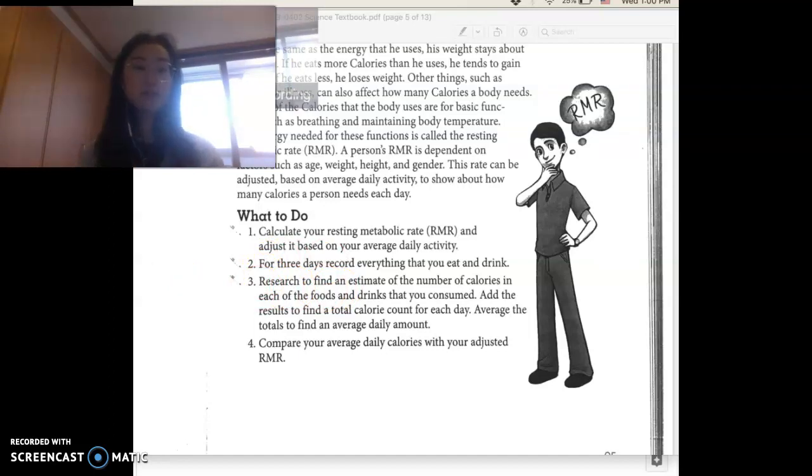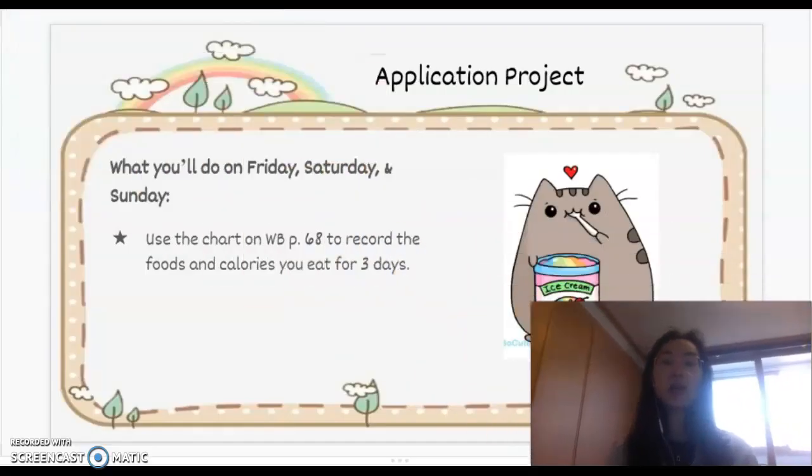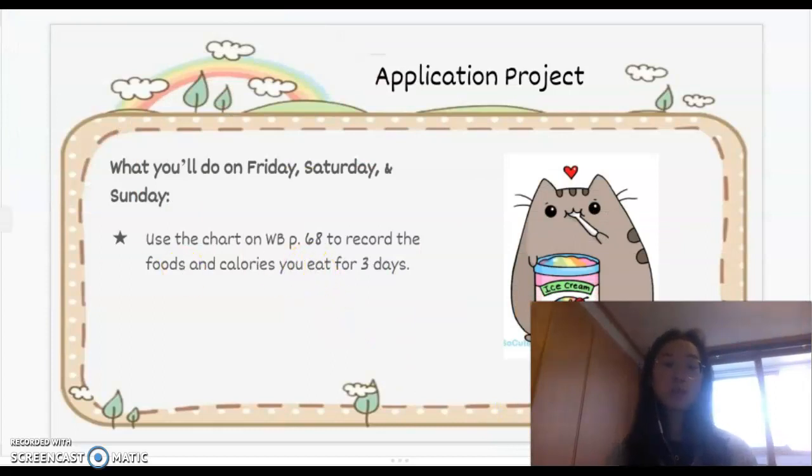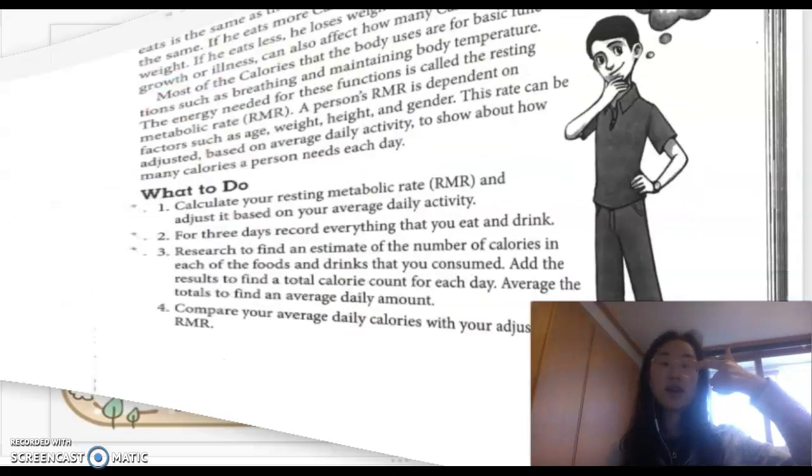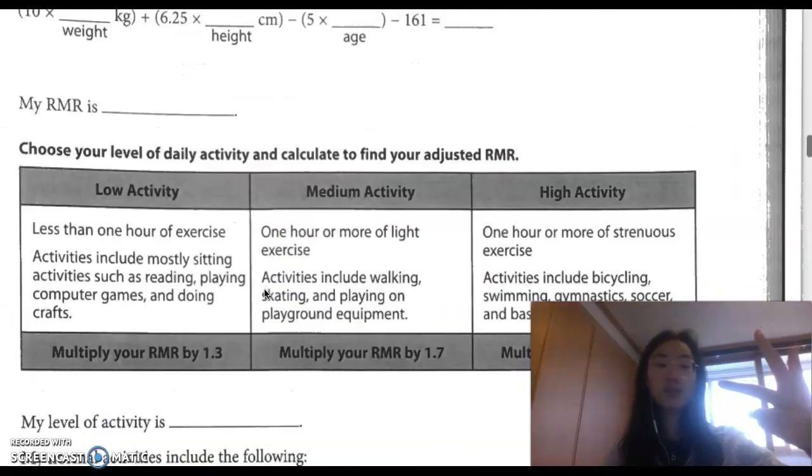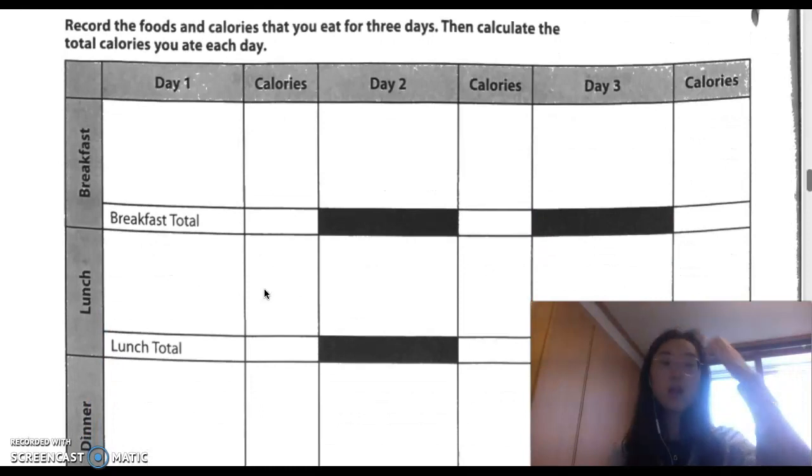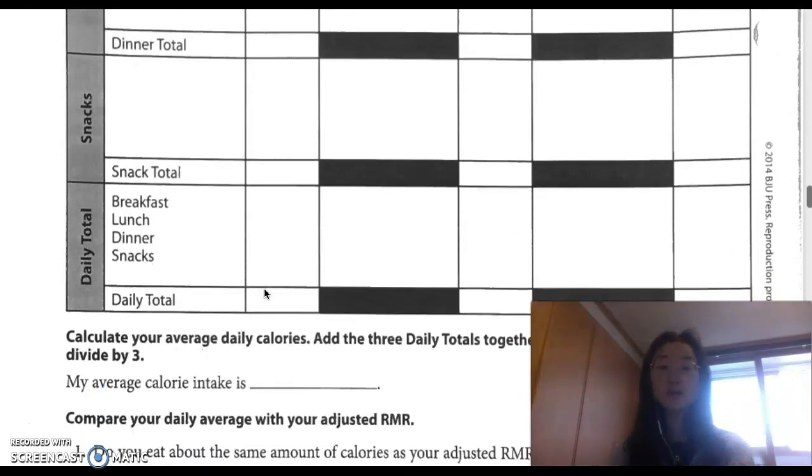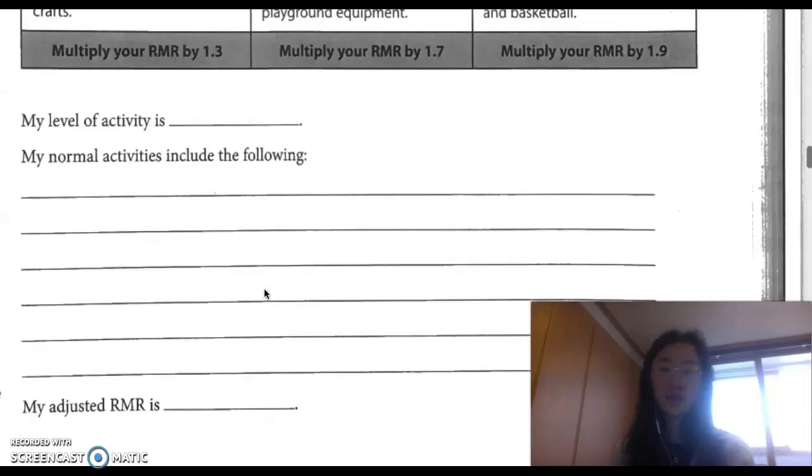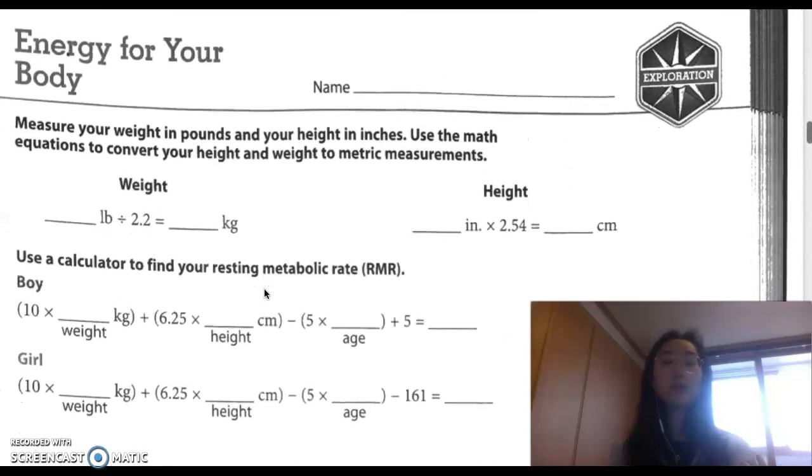So we're gonna be doing number one today. Okay, for number two and three you're gonna be doing it tomorrow, which is Friday, Saturday, and Sunday. So you're gonna be using the chart on page 68 to record the foods and calories that you eat for Friday, Saturday, and Sunday.